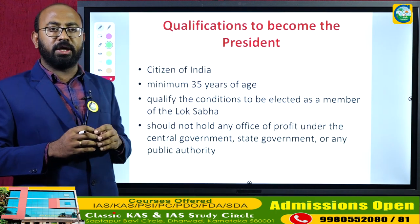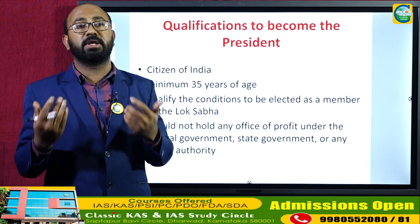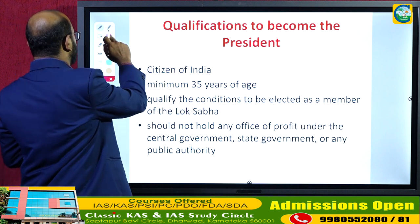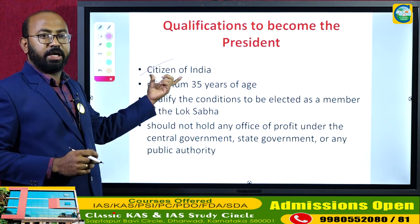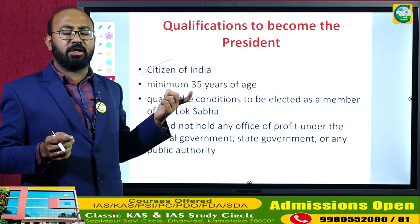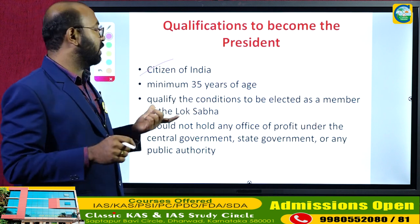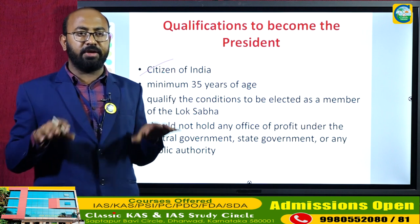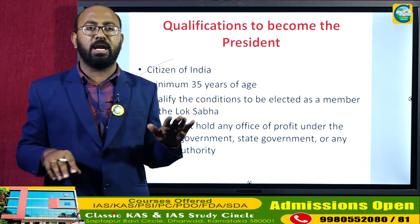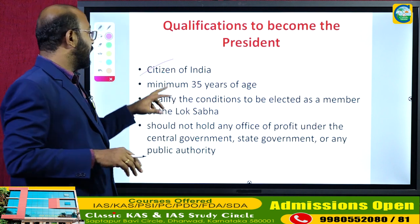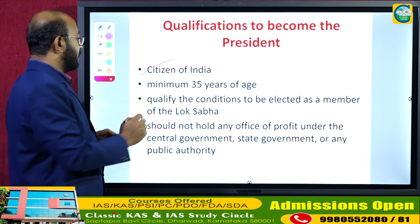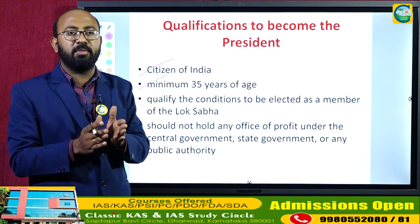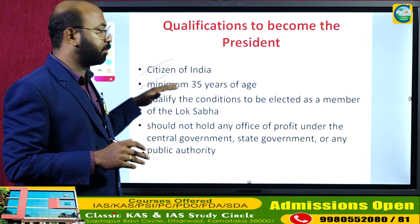There are four qualifications to become the President of India. First, the person must be a citizen of India — naturally born. Second, he must have completed the minimum age of 35 years. Third, he should qualify the conditions to be elected as a member of Lok Sabha, as enshrined in the Representation of People Act 1951 and the Constitution. Fourth, he should not hold any office of profit.